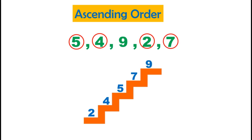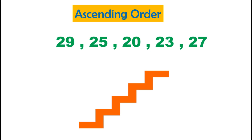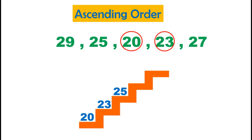Let's arrange 29, 25, 20, 23, and 27 in ascending order. The smallest amongst the given numbers is 20 — let's circle it. Now amongst the remaining numbers, the smallest is 23. Correct — let's circle 25. Now between 29 and 27, the smaller number is 27 — let's circle it.